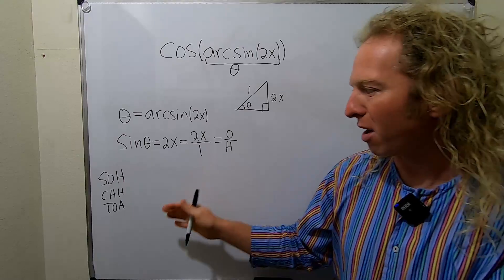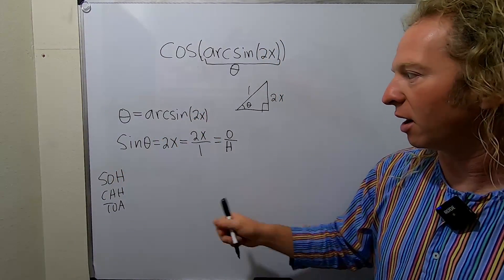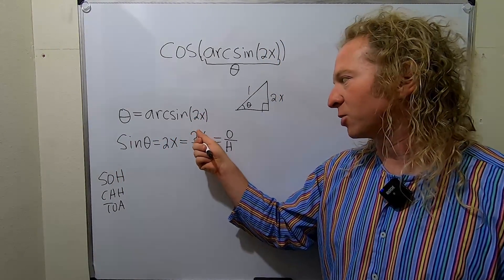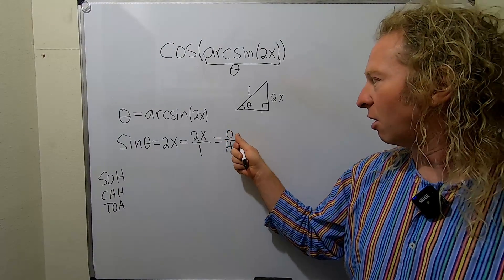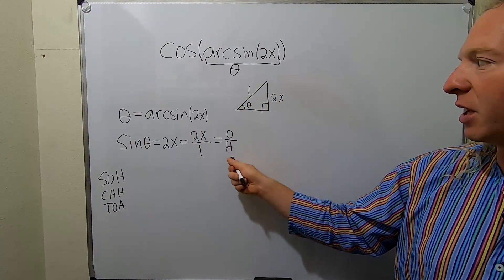Then use the ancient proverb, SOHCAHTOA. So this is SO. So it's 2x over 1. So it's opposite over hypotenuse. Cheap trick. O is 2x. That's your opposite. H is 1.